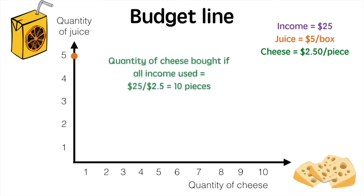If the consumer spends all of their income on cheese, they can buy $25 divided by $2.50 worth of cheese, which equals 10 pieces of cheese. We mark that on the x-axis.